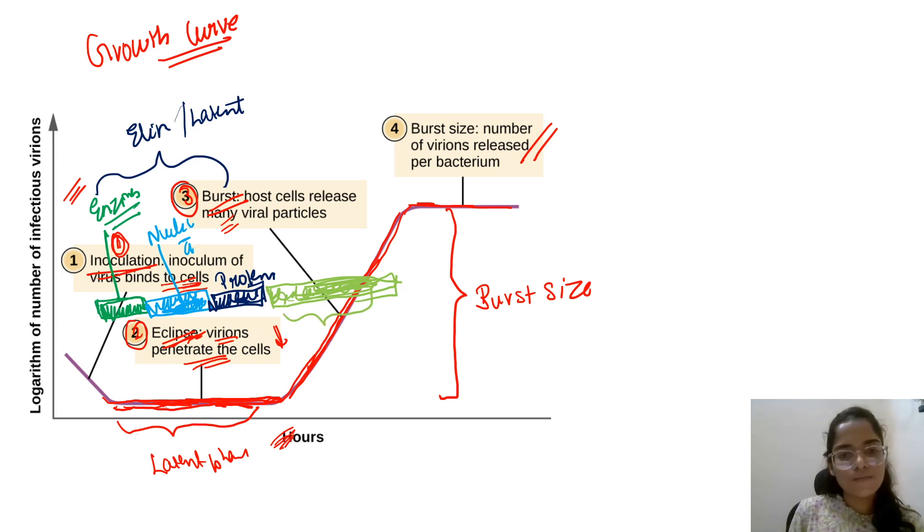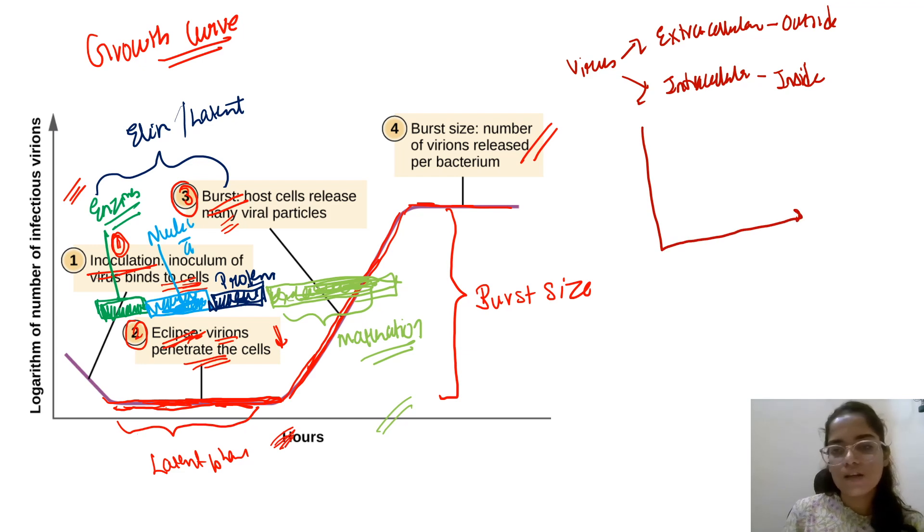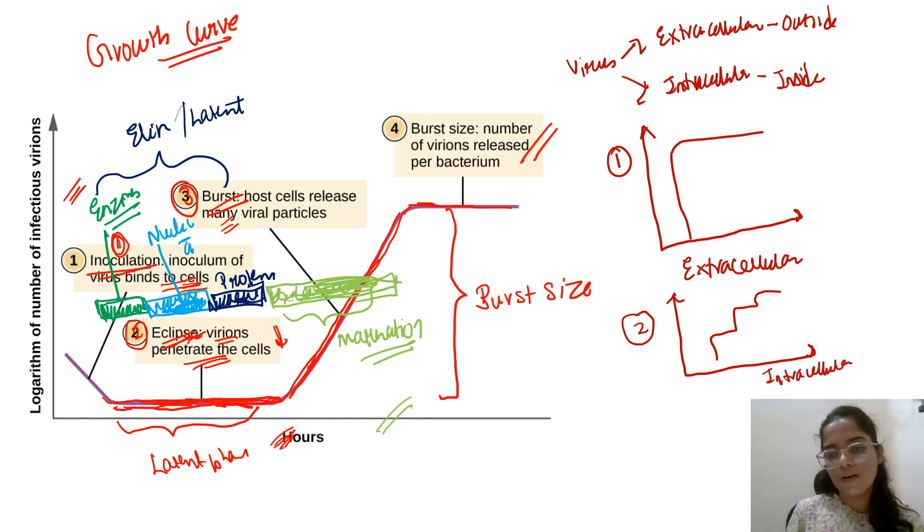So this is like the maturation phase of a virus. Now this is the overall curve for a virus. But there are two types of viruses: extracellular virus and intracellular virus. Extracellular means which can survive outside the body of the host, and intracellular means inside the host. Now the growth curve for extracellular virus is like this. And for intracellular virus, we get a curve which is stepwise. This is the curve for intracellular virus.